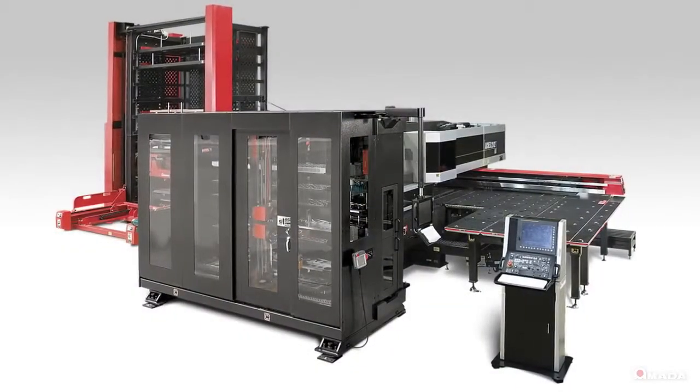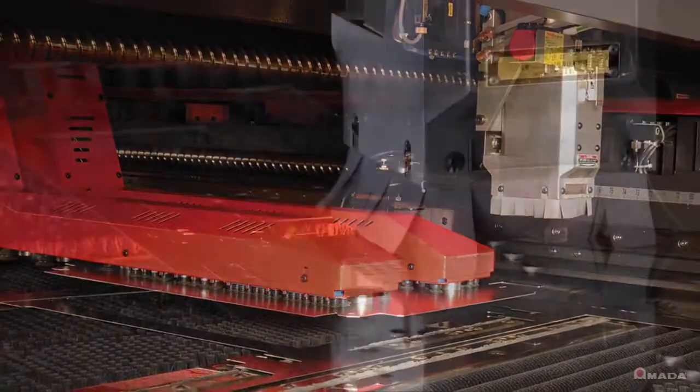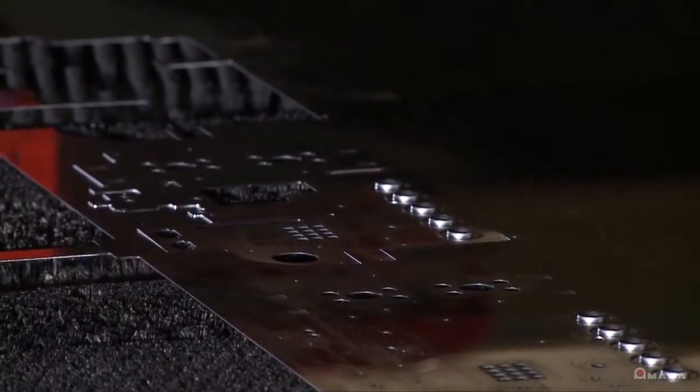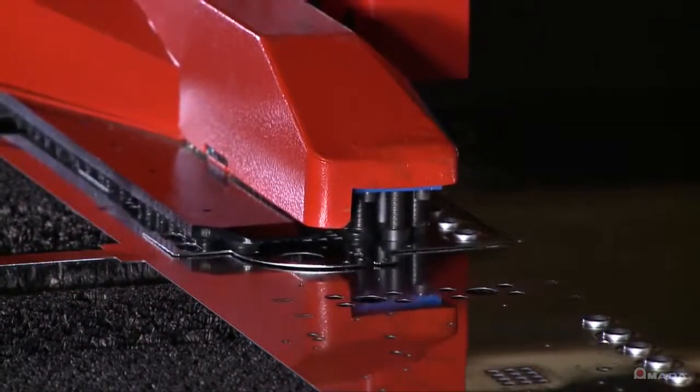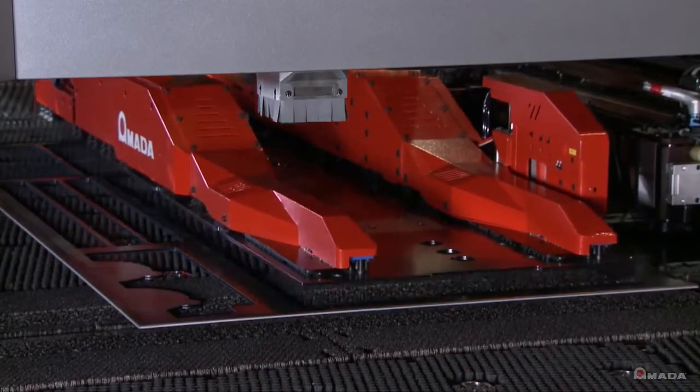With all of these standard features on the AKIA, we also offer multiple automation options from part unloading to multiple shelf towers. Options that give you customized flexibility and allow you to take your shop's production rate to a higher level.